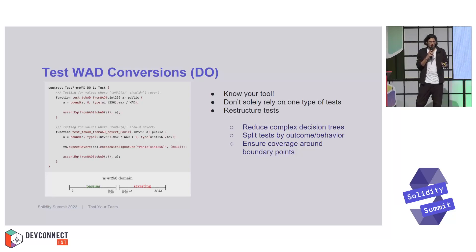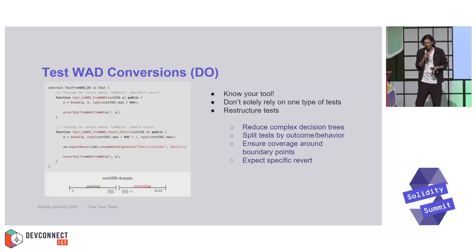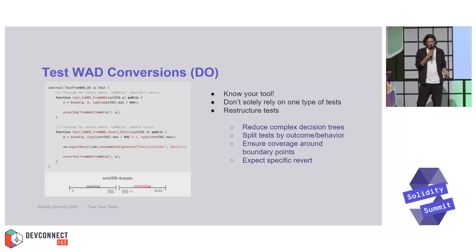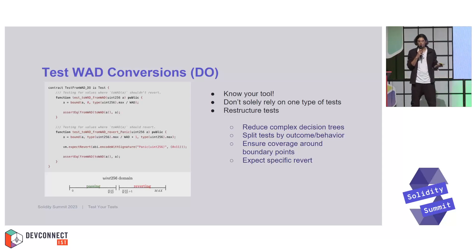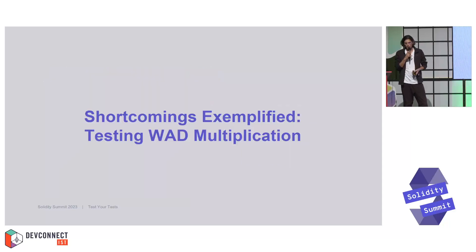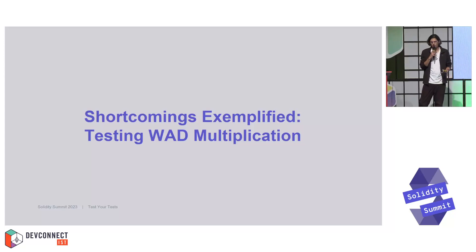We should also be more explicit with our revert catching. We don't want to catch any kind of reverts indiscriminately — it could happen that the function reverts for some unexpected reason, and if we just use a general expect-revert we'd be catching any kind of reverts. We want to be as explicit as possible with defining the behavior.